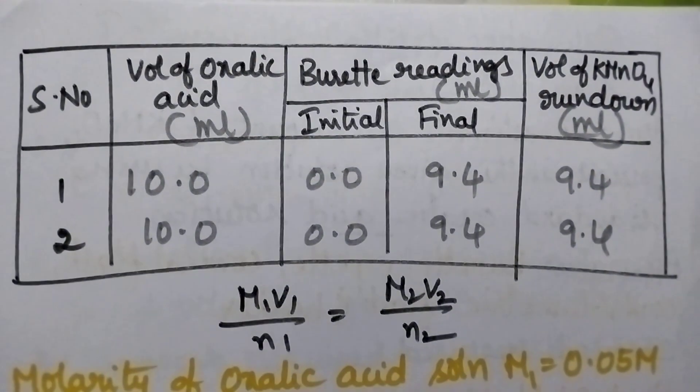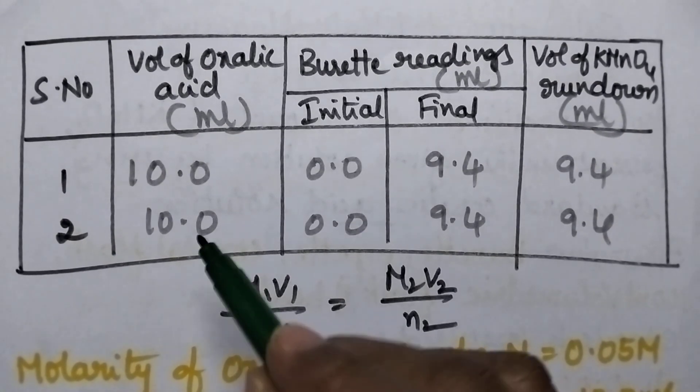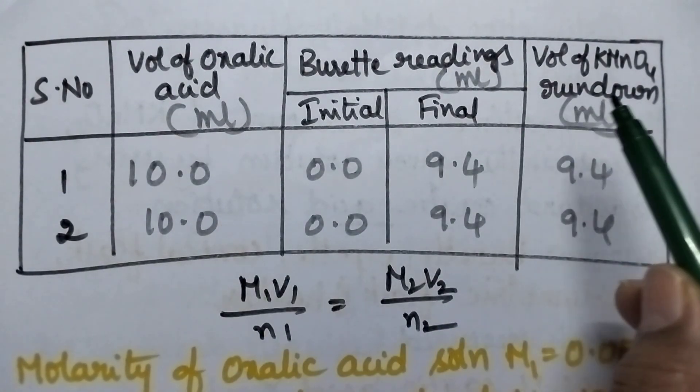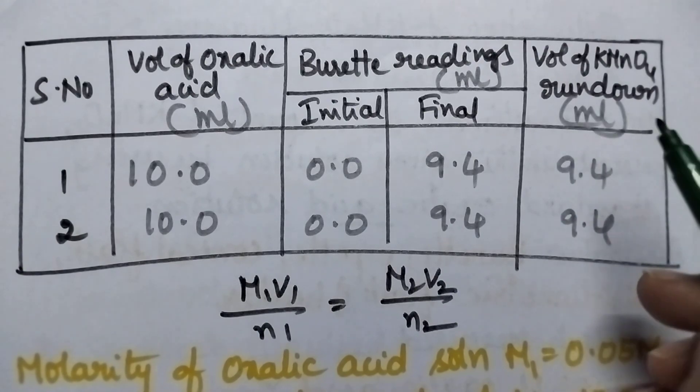Coming to the tabulation of the readings, it involves the volume of oxalic acid, burette readings and the volume of potassium permanganate rundown.